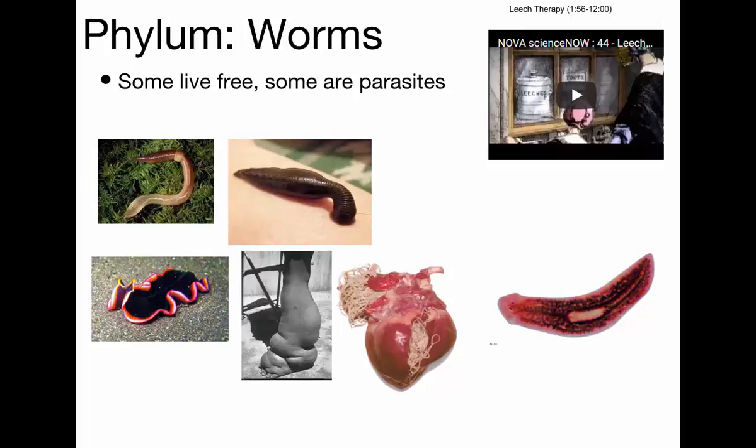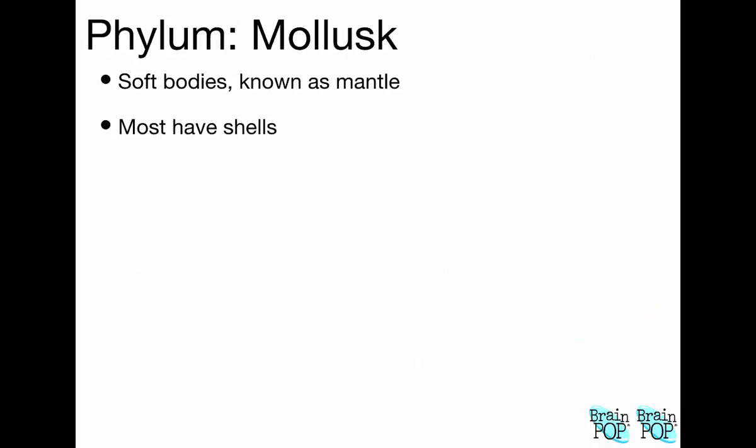This is another flatworm, but this is a free-living, not a parasitic one. It's called a fluke. They live in the oceans, they're really colorful, and they swim by waving the margins of their body around — really neat-looking things. So those are worms, a group of invertebrates.